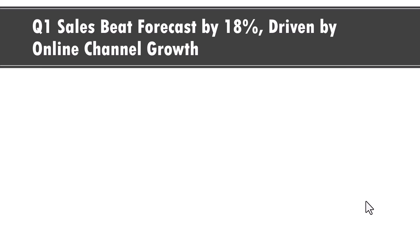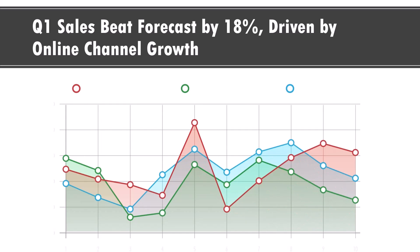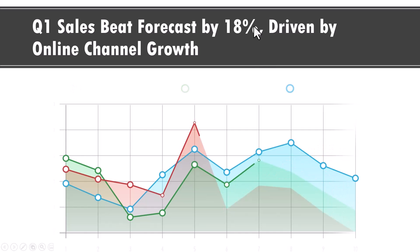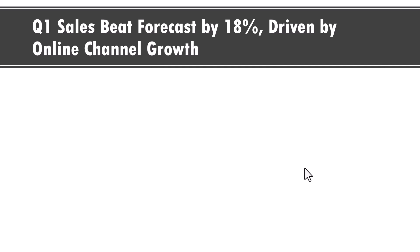What would be their next expectation? The title says: Q1 sales beat forecast by 18% driven by online channel growth. Naturally, the content of the slide should be a chart showing sales contribution from different channels, with online channel being the most. That chart should also compare actual performance to the target set for the quarter. Can you see how a clear slide title automatically guides you to include the right visual evidence to support your claim? That is the power of a good slide title.